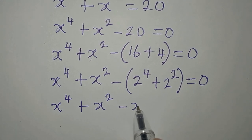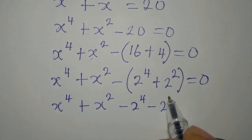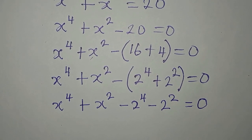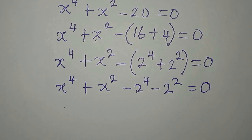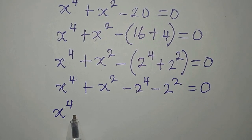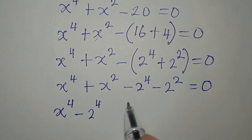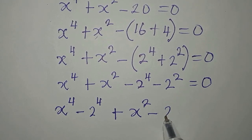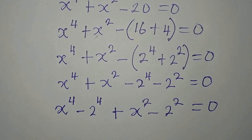If we open the bracket, we'll have x to the power of 4 plus x to the power of 2 minus 2 to the power of 4 minus 2 to the power of 2 equals 0. We can start rearranging so that we have x to the power of 4 minus 2 to the power of 4, then plus x to the power of 2 minus 2 to the power of 2, everything equals 0.